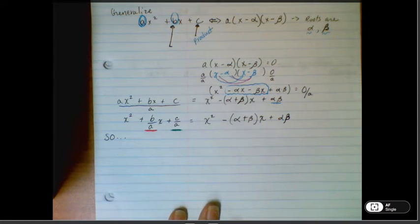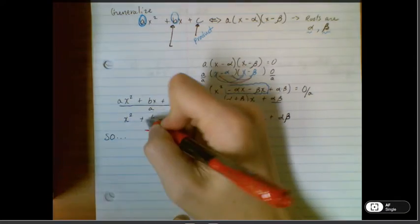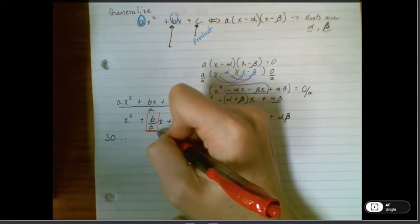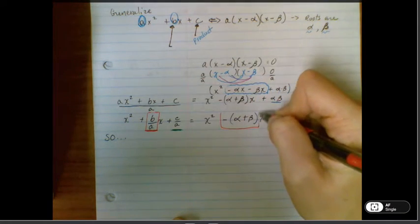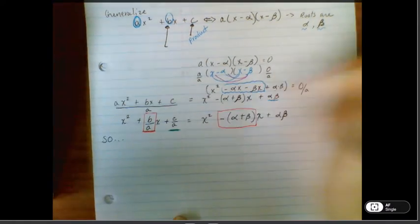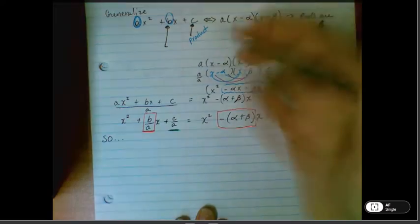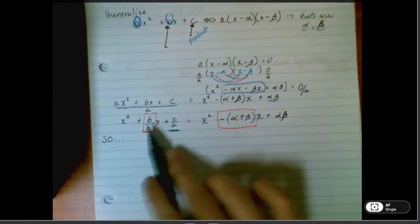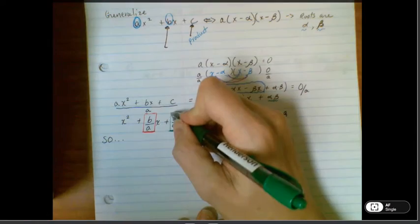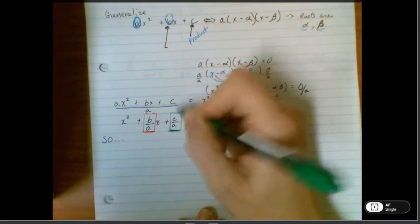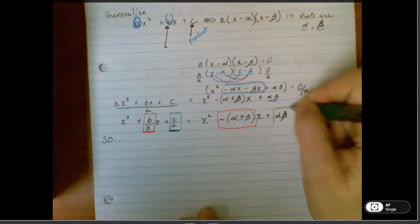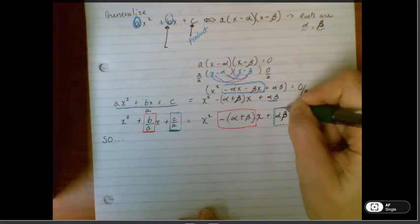So when we look at these two things together, this term right here and this term right here are the same, although written algebraically different. And then this term right here and this term right here are the same.